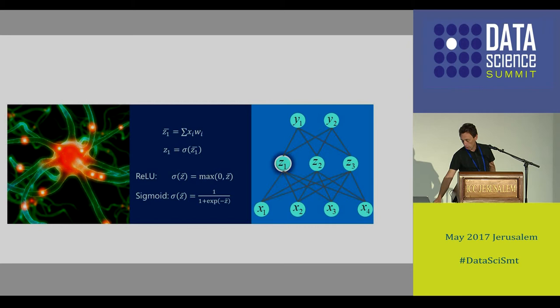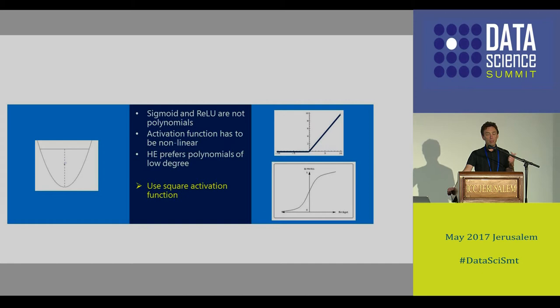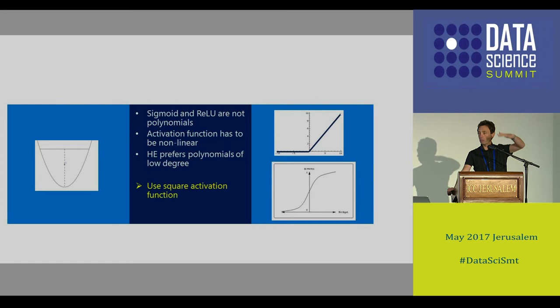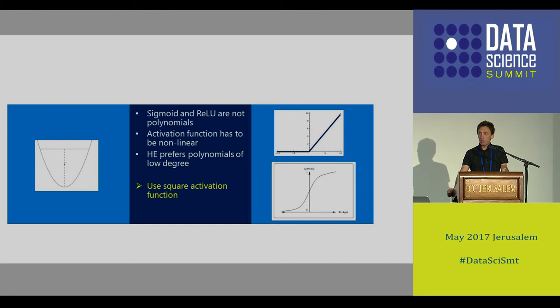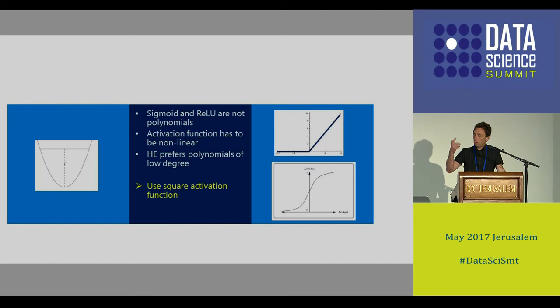So how do we go about it? Thinking in terms of machine learning, what do we need from an activation function? The main thing we need is that it will be non-linear, because if it's linear the entire structure of the neural net collapses. From a crypto point of view, we want the activation function to be a low-degree polynomial. So what is the lowest degree polynomial that is non-linear? The square function. So we use a square activation function. That's just a glimpse of the kind of techniques you use to make your computation more practical for homomorphic encryption.